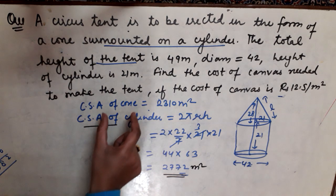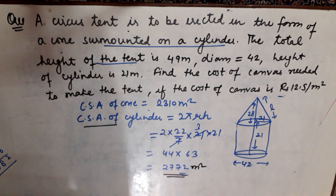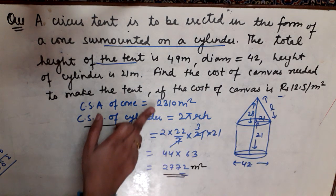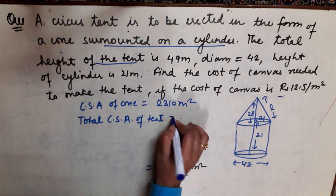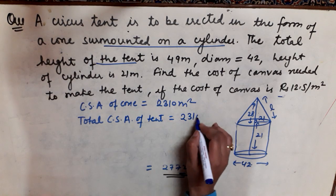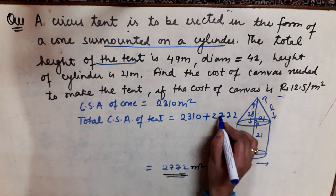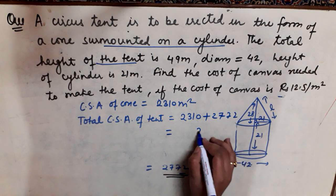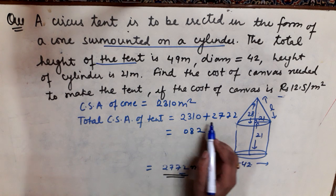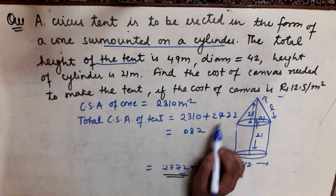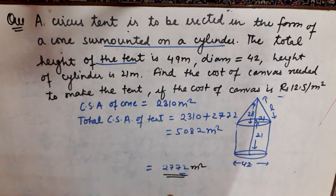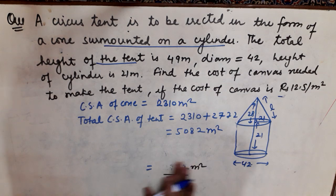Now we have the curved surface area of both cone and cylinder, so we can find the total curved surface area of the circus tent by adding them: 2310 + 2772 = 5082 meter square. This is the total curved surface area of the tent.